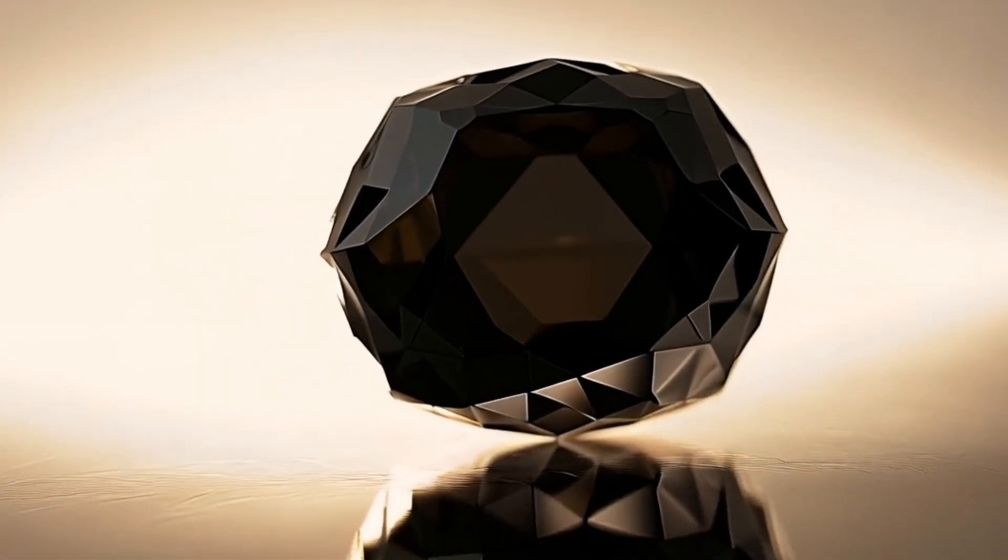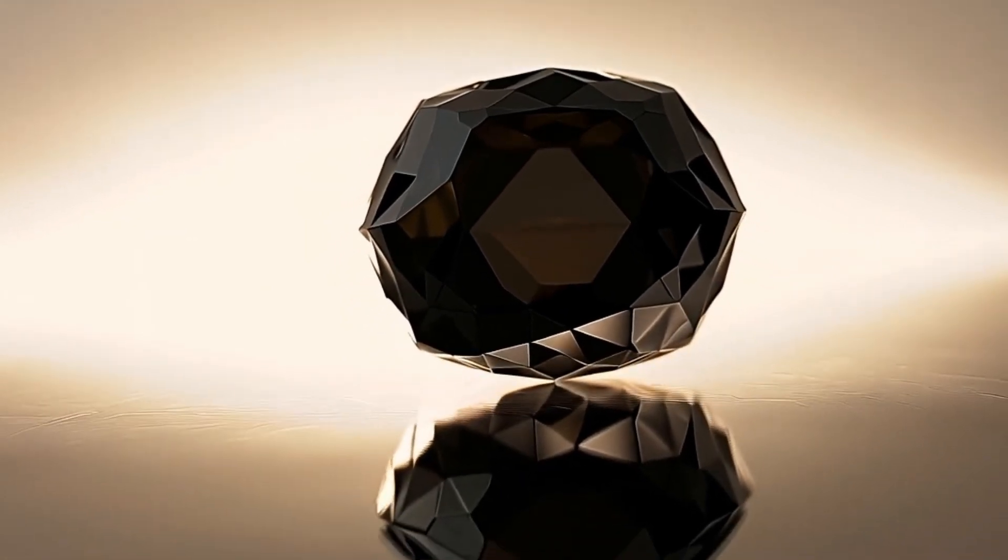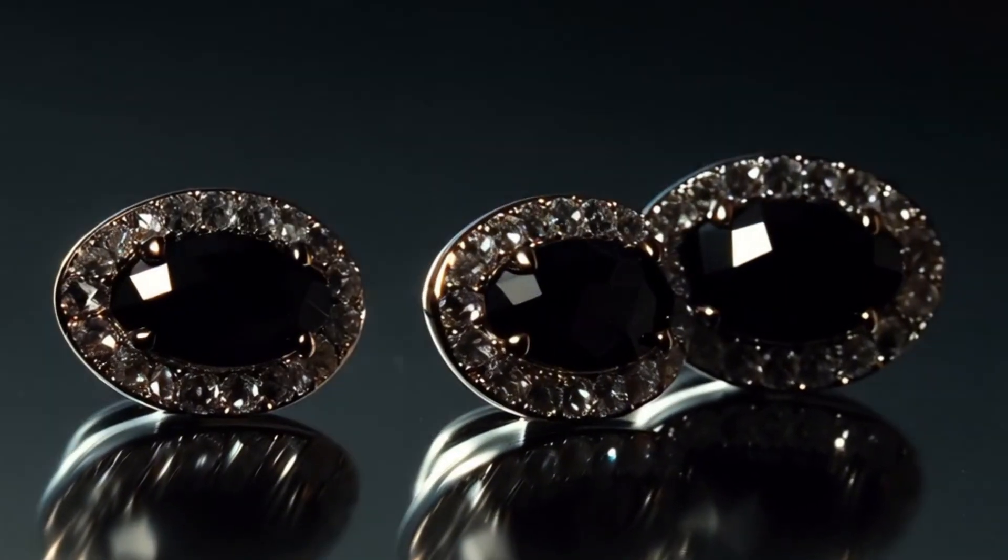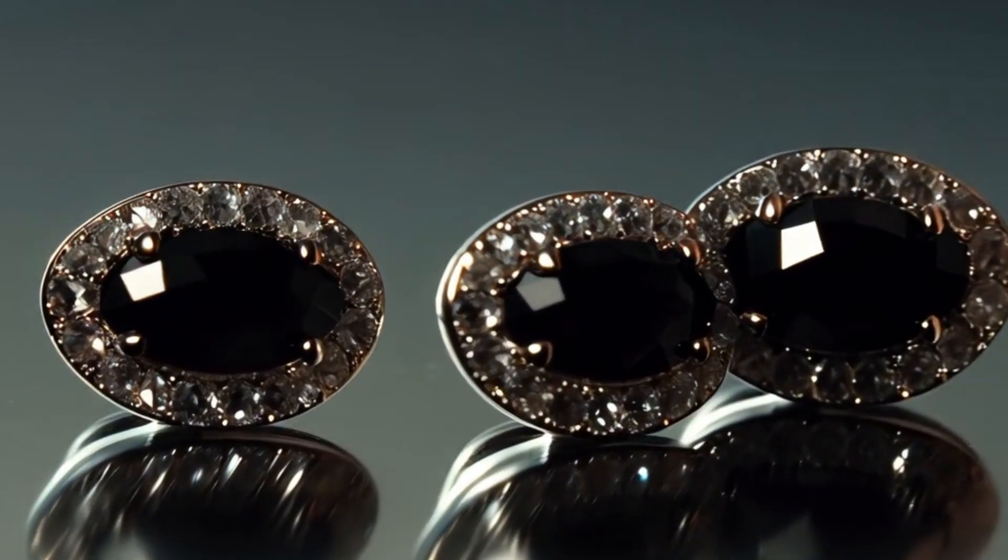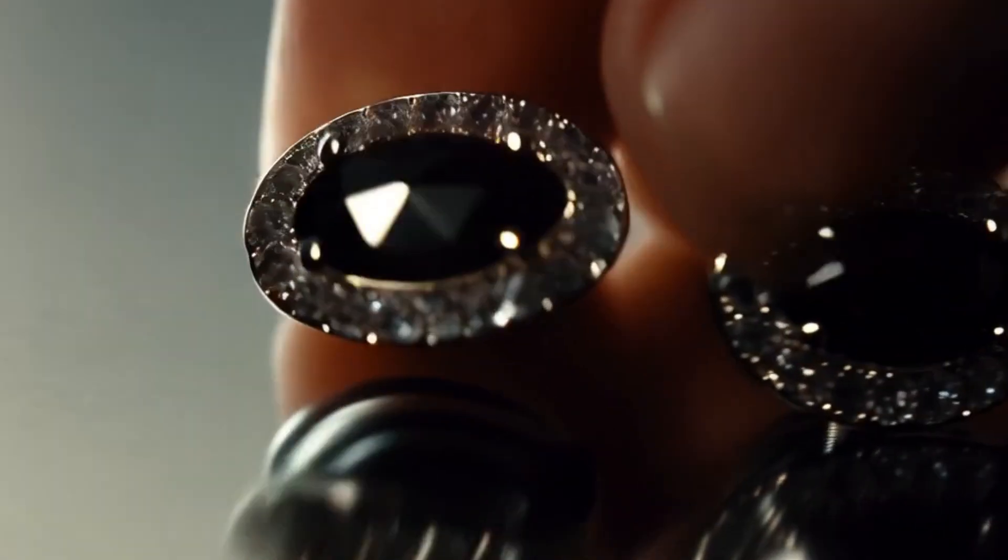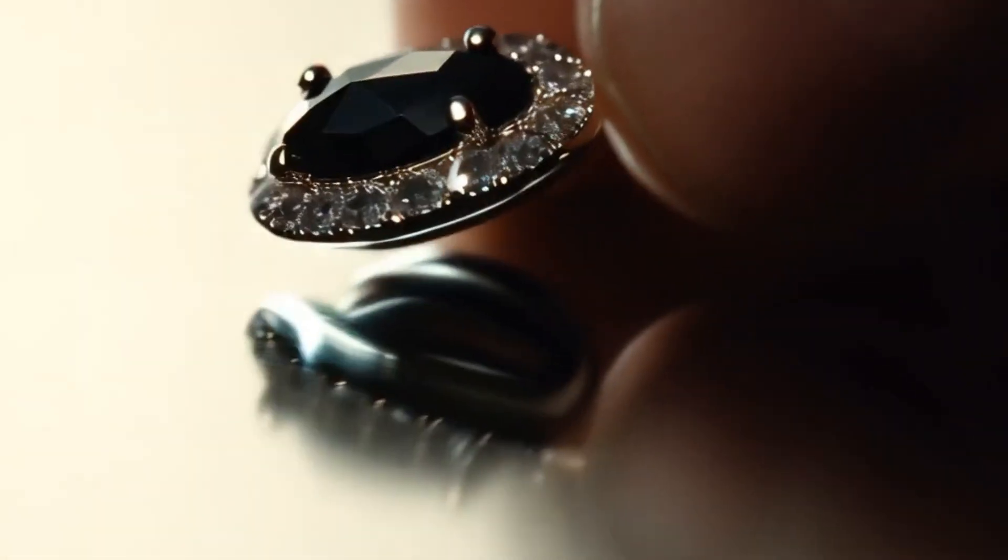What makes black diamonds different? Unlike white diamonds that sparkle with brilliance, black diamonds appear opaque and dark. Their color comes from the tiny inclusions of graphite, hematite, and other minerals inside the crystal. These inclusions absorb light, giving them their signature deep black or dark gray appearance.